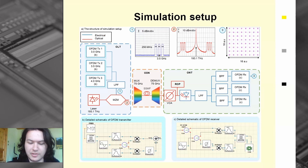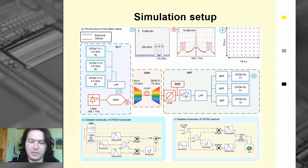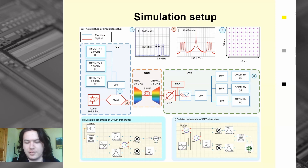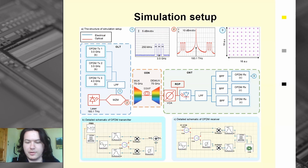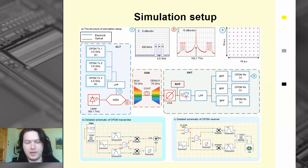We ensure wide applicability by recalculating the EVM-versus-ROP curve for another receiver sensitivity and responsivity by introducing only an additional power penalty, without performing additional simulations. The simulation setup demonstrates a three-RF-channel OFDM radio-over-fiber transmission system for the sub-6 GHz frequency range, integrated into a passive optical network architecture.